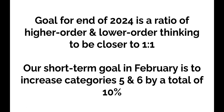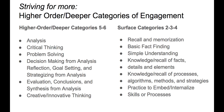Our short-term goal by February is to increase our categories 5 and 6 — our higher-order thinking — by 10%. In order to do that, we're going to look at certain things like analysis, critical thinking, problem solving, and synthesizing information.